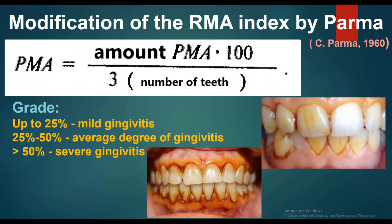Modification of the PMA index by Parma: PMA% = (sum of PMA × 100) divided by (3 × number of teeth). Interpretation: up to 25% — mild gingivitis; 25 to 50% — average degree of gingivitis; more than 50% — severe gingivitis.